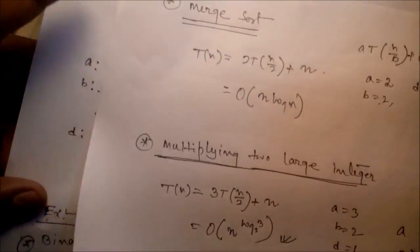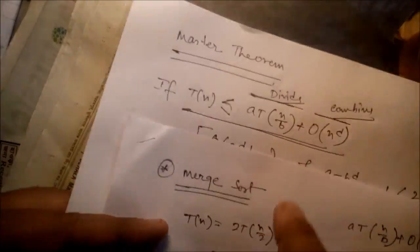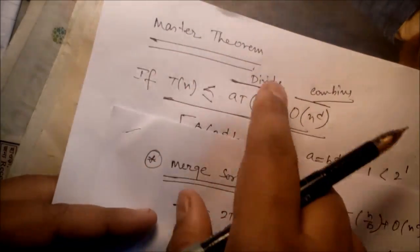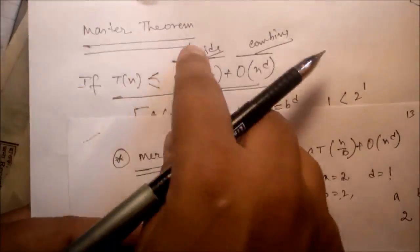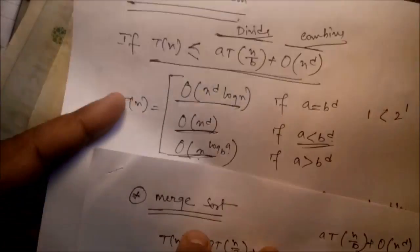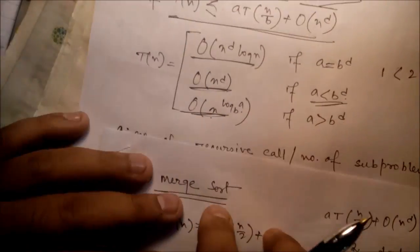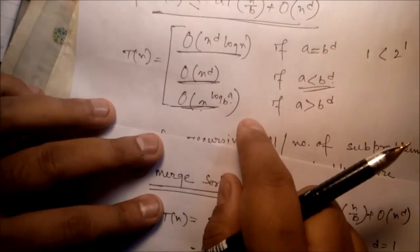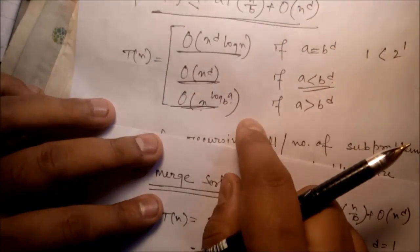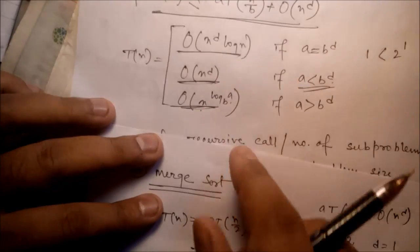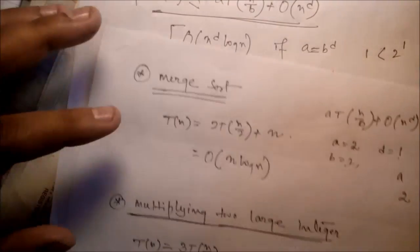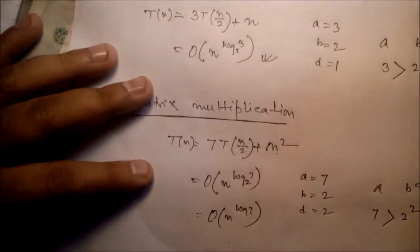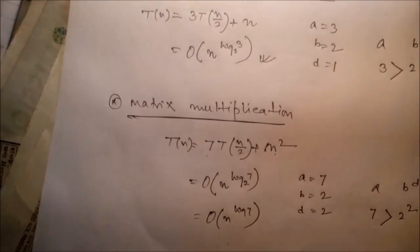By applying the Master Theorem — if the recurrence is in the required format — we can directly get the final time complexity without manually solving the recurrence relation. That is the end of this topic. Thank you very much.